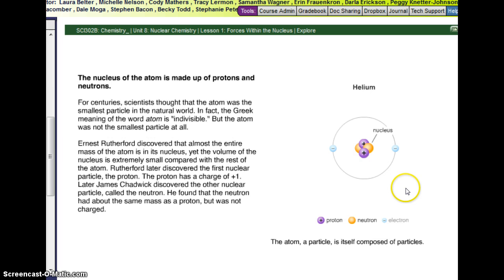The nucleus of an atom is made up of protons and neutrons. For centuries, scientists thought that the atom was the smallest particle in the natural world. In fact, the Greek meaning of the word atom is indivisible. But the atom was not the smallest particle at all. Ernest Rutherford discovered that almost the entire mass of the atom is in its nucleus. Yet, the volume of the nucleus is extremely small compared to the rest of the atom. In other words, it's really heavy in the center, but the center is just a little part of the entire atom.